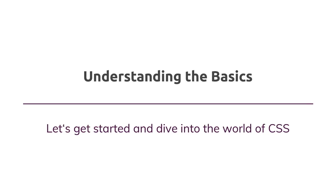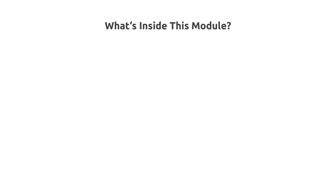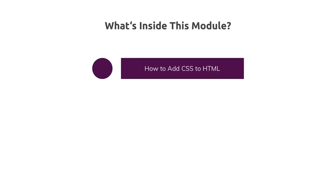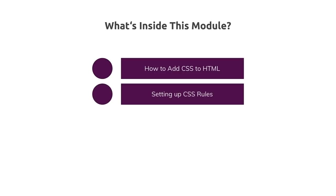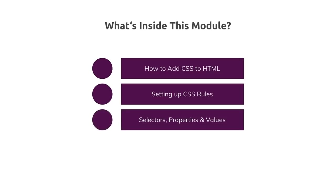Welcome to this module. Let's dive right into the basics of CSS. In this module, you will learn how you can add CSS to HTML to ensure your page looks good, and which different options you have for that. We'll then dive into how you set up CSS rules — how you actually write CSS code to change something on your page. We'll also dive deeper into selectors, properties, and values.